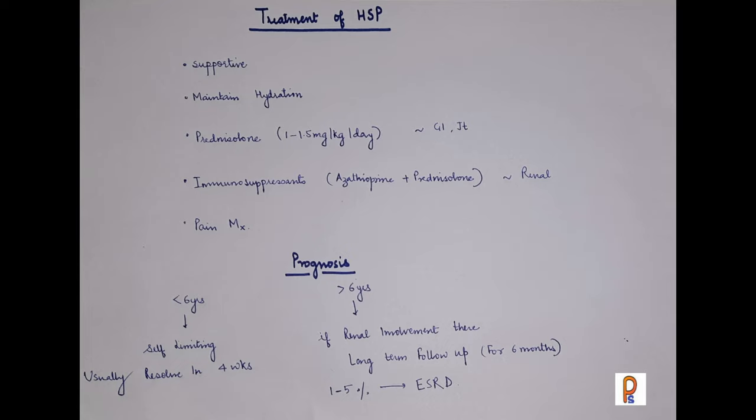We need to maintain hydration and give analgesics for pain management. If there is severe joint or GI involvement in the form of arthritis or severe abdominal pain, we start prednisolone at 1 to 1.5 mg per kg per day for 2 to 3 weeks. If there is severe renal involvement, we use immunosuppressants like azathioprine, prednisolone, or methylprednisolone pulse therapy. Plasma exchange may also be needed in such cases.